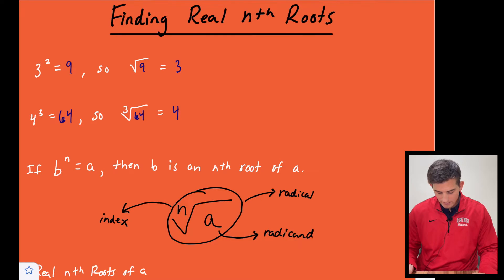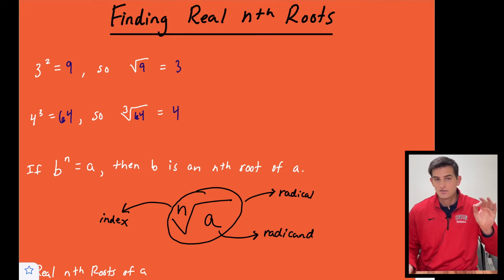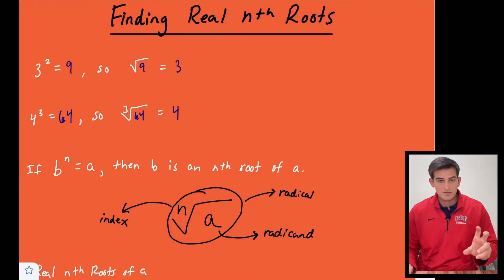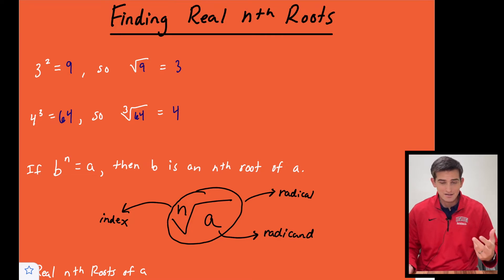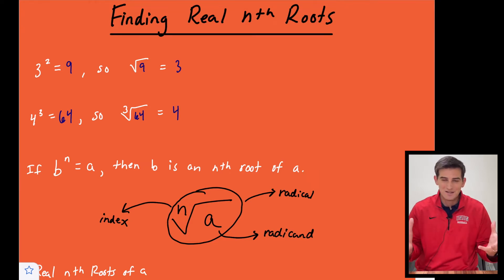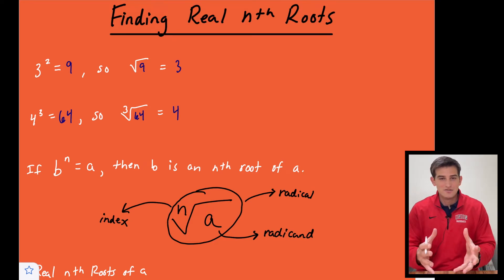We have three parts here. We have the index, which is our n — so that's like square root, cube root, fourth root, and so on. Then we have the number that we are taking the root of, that would be a, and that is called our radicand. And then the entire expression that you see is known as the radical.